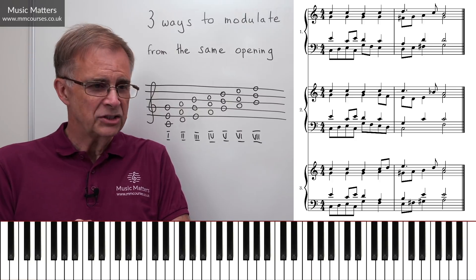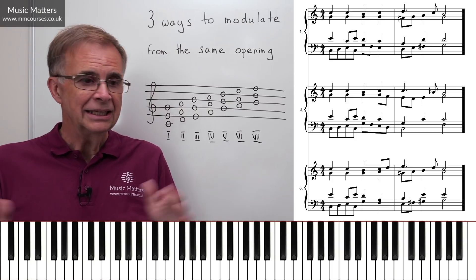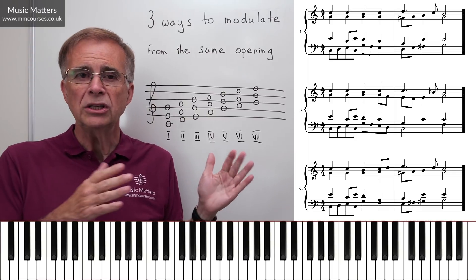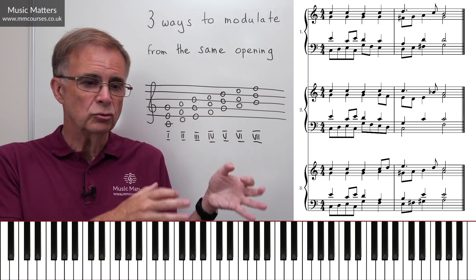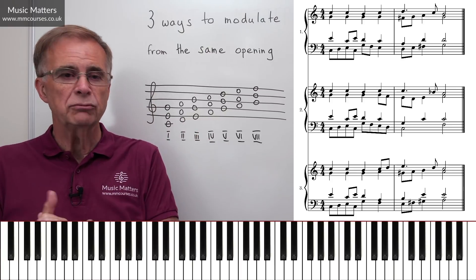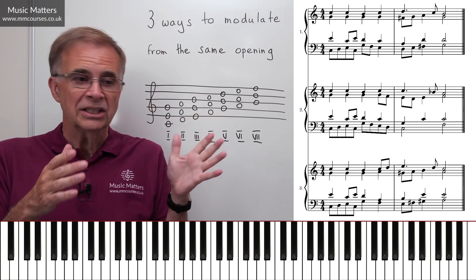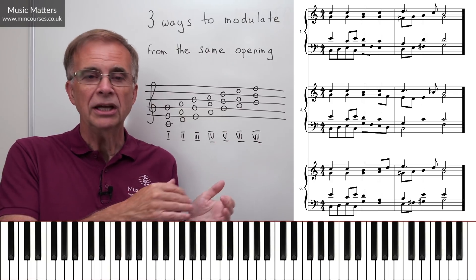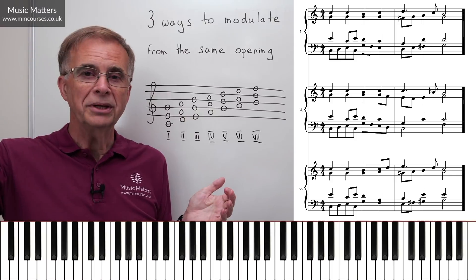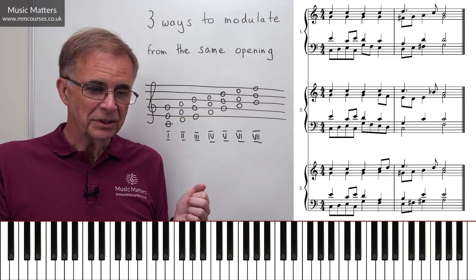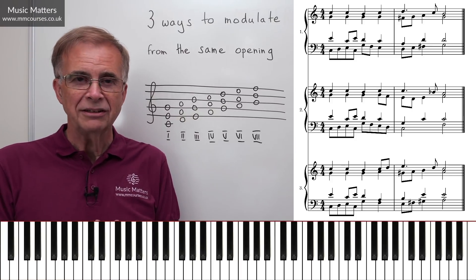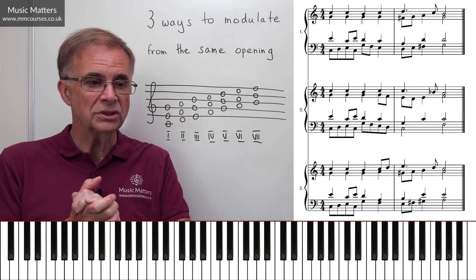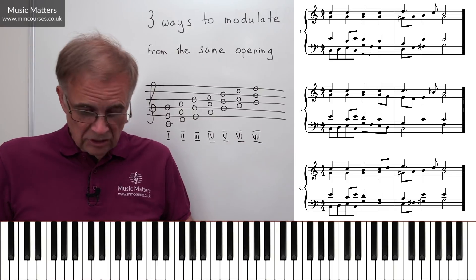We're looking at examples that begin in C major, and we're going to work out how to use a pivot chord to go to the three most closely related keys. Starting in a major key as we are here in C major, those three closely related keys are the dominant key, the subdominant key, and the relative minor key.